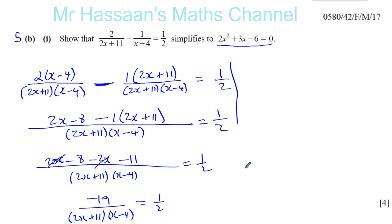I'm just going to move on to this side here. So now we have, we can just cross-multiply. You have minus 38, 2 times minus 19 equals, and here you're going to have 2x plus 11 times x minus 4.